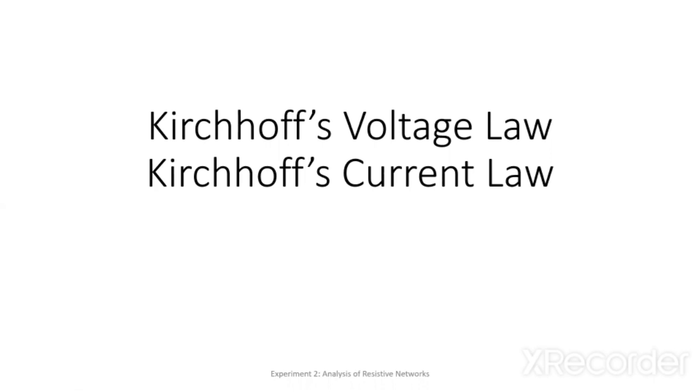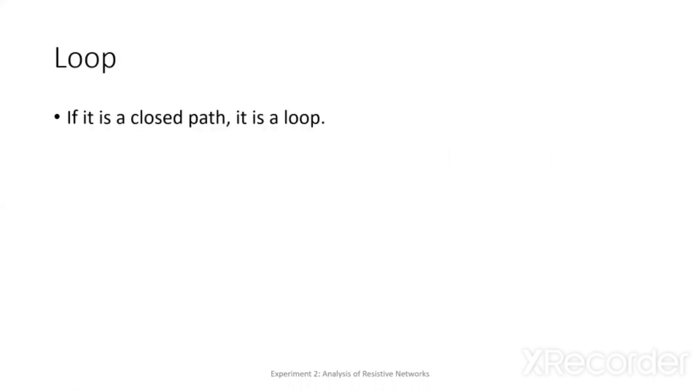But before we discuss KVL and KCL, let's discuss first loop and node. So first one is loop. The definition of loop: if we have a closed path, then we have a loop.